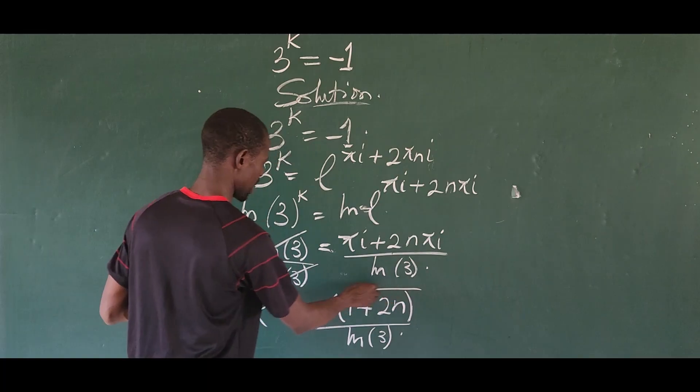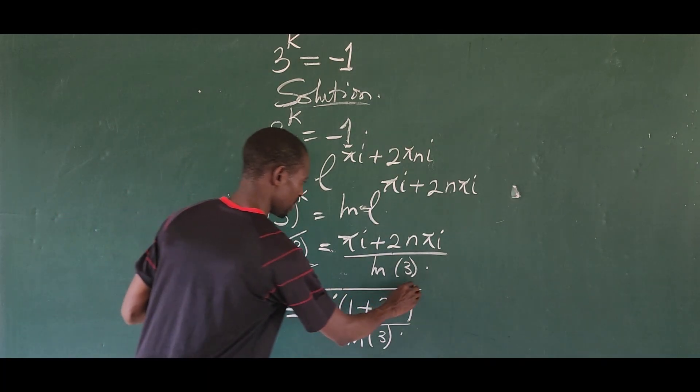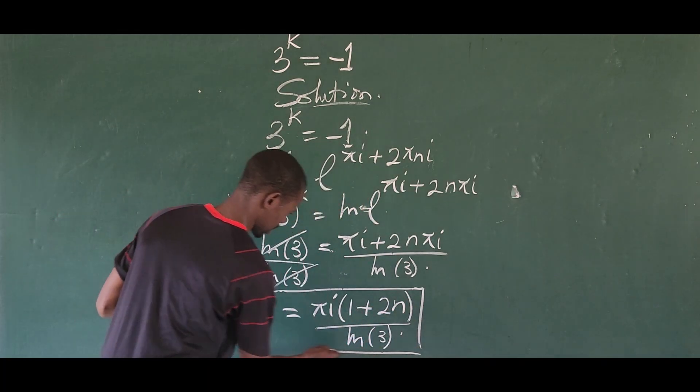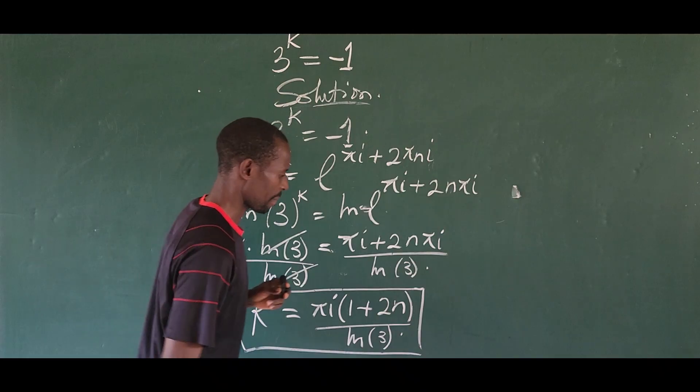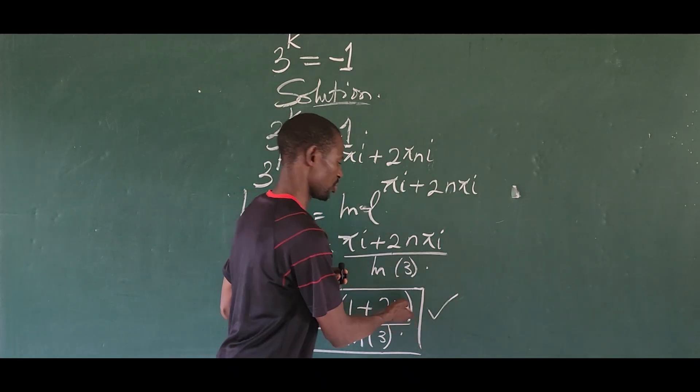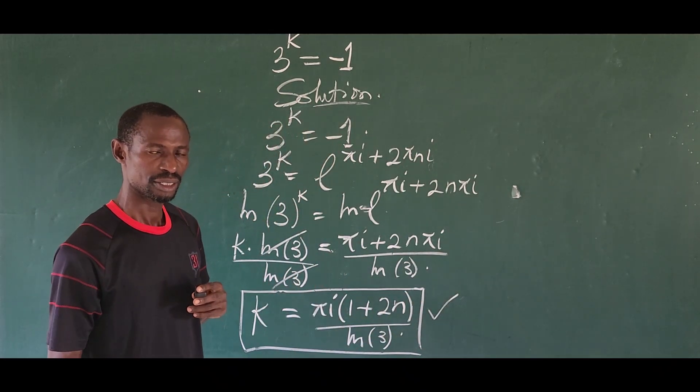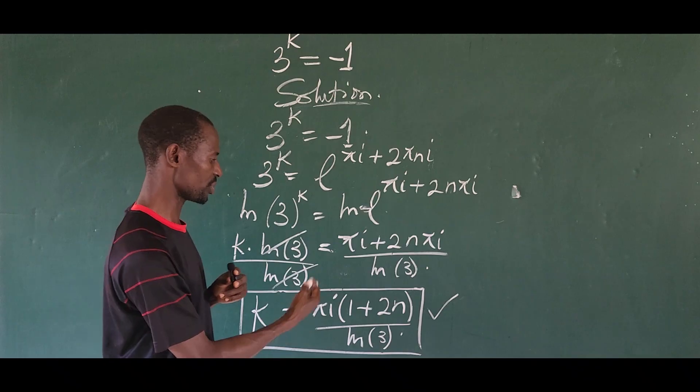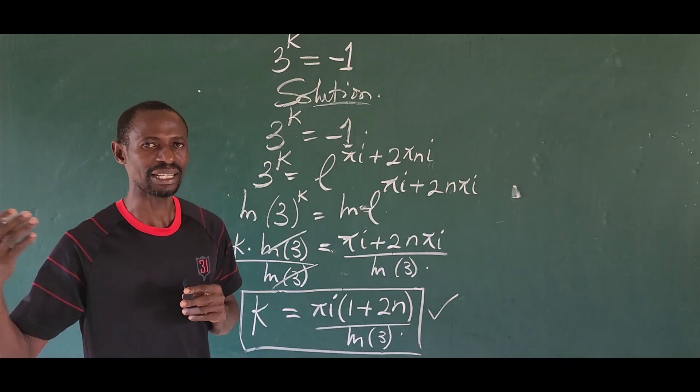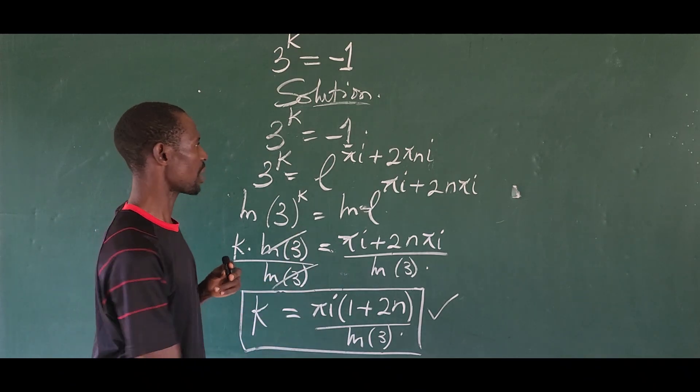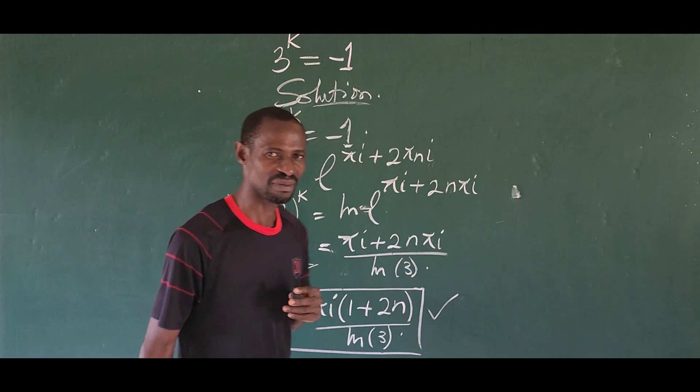So this is the set of imaginary numbers that can actually satisfy the original equation. So if you vary your n, substitute your value of n into the system, you can actually get different solutions to this math problem. So this is simple work.